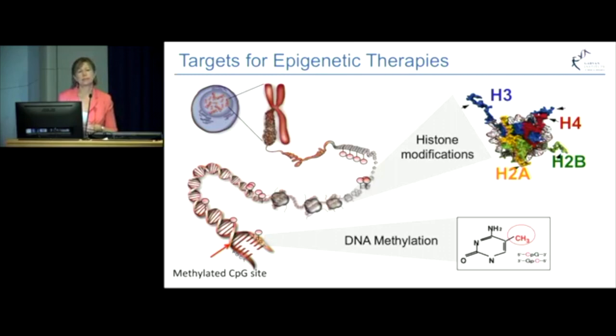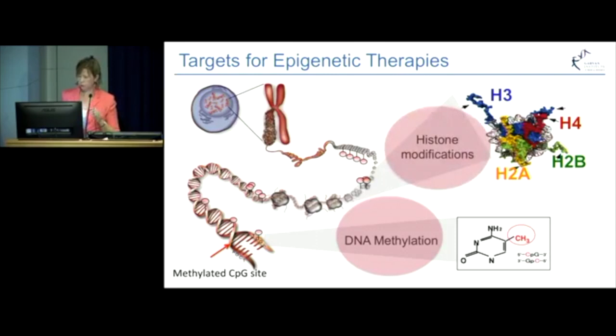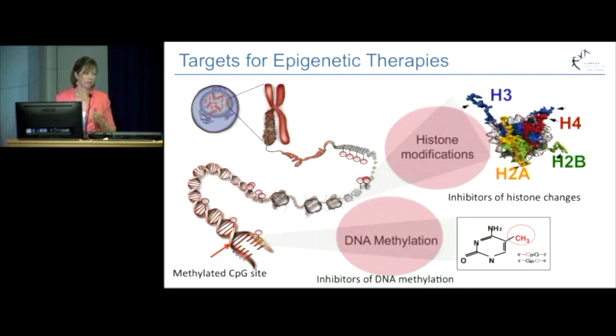If we consider our best-studied epigenetic mechanisms — DNA methylation and the histone modifications — these two well-studied mechanisms on our DNA offer us opportunity for epigenetic therapies. Today, the most advanced and clinically most validated of the epigenetic therapies target DNA methylation and target the histone changes.